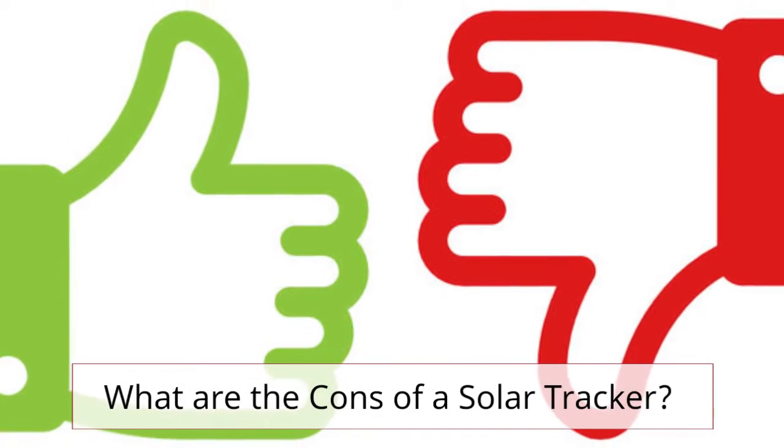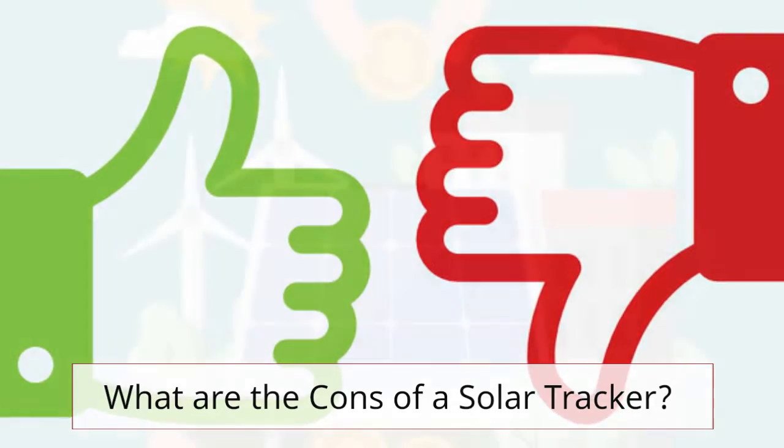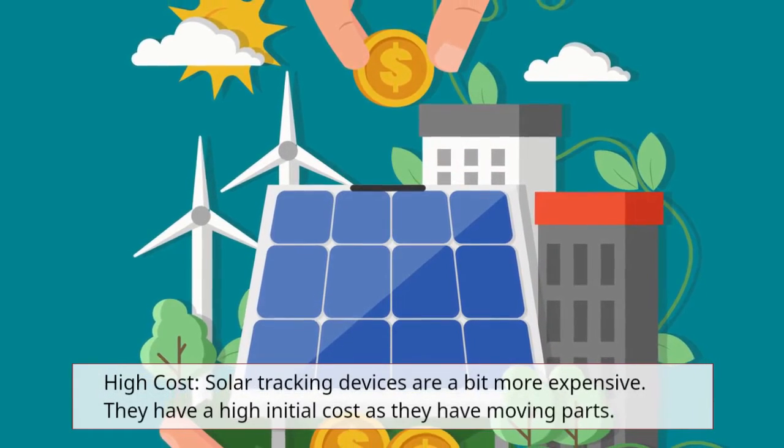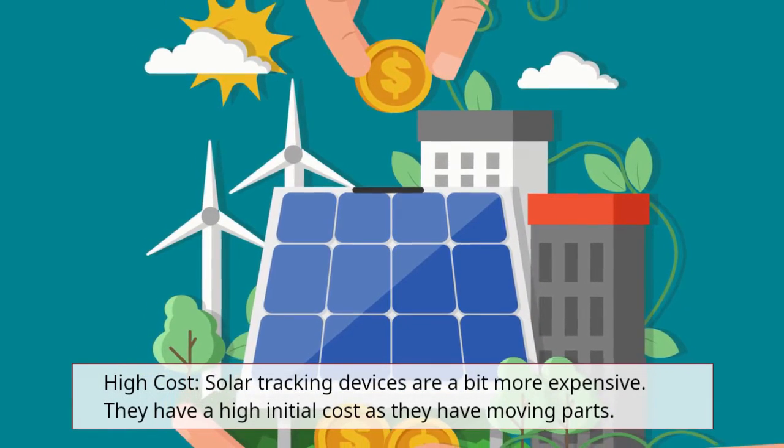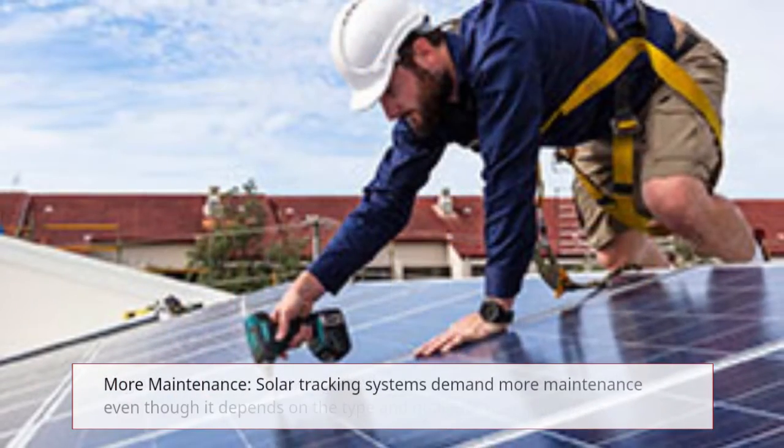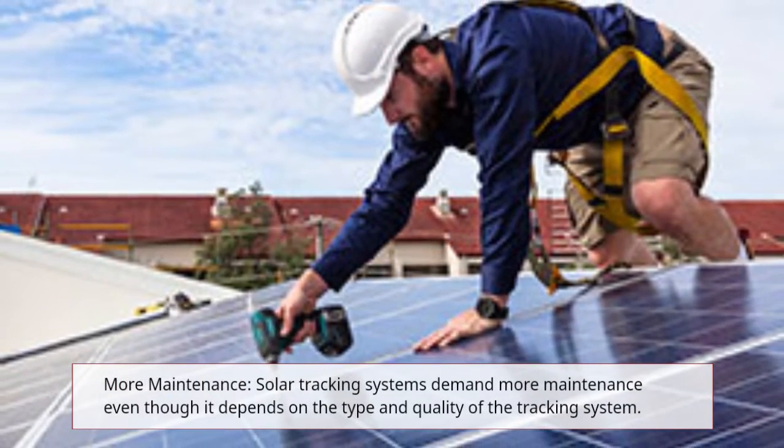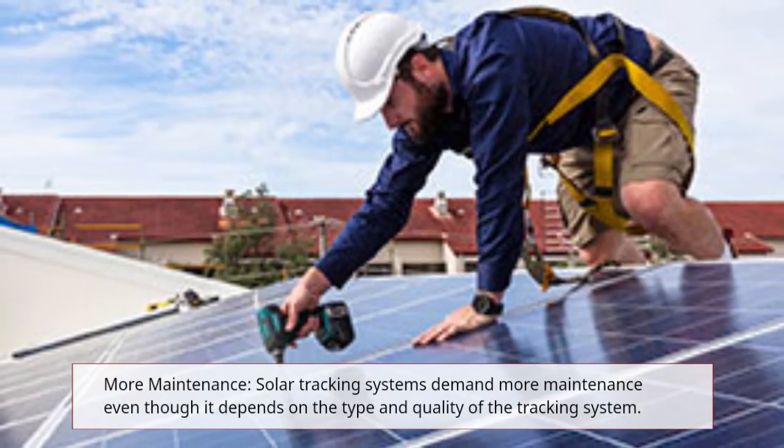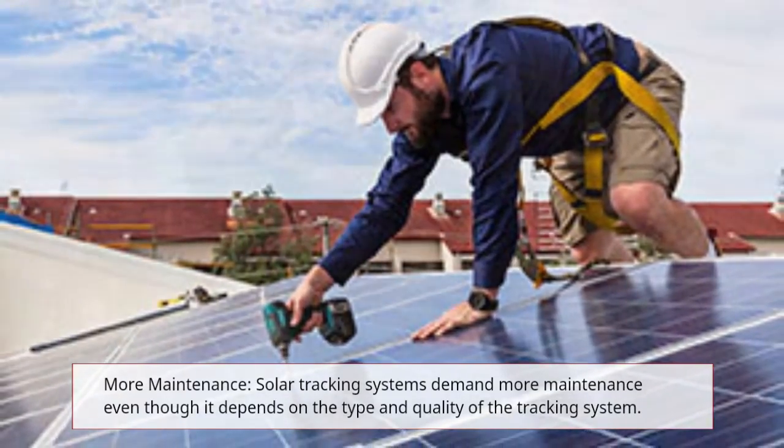Now, we are going to discuss the cons of a solar tracker. High cost: Solar tracking devices are a bit more expensive. They have a high initial cost as they have moving parts. More maintenance: Solar tracking systems demand more maintenance even though it depends on the type and quality of the tracking system.